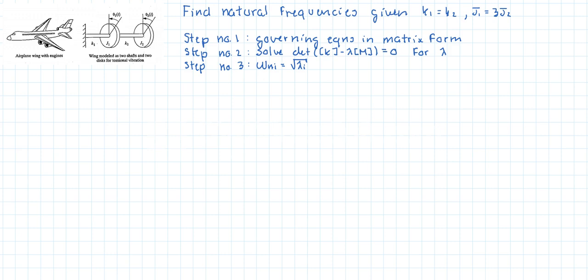Hi everyone. In this video we're going to do a second example on finding the natural frequencies of a two degree of freedom system. We're given that the stiffness constants of the first and second shafts are equal, and also the rotational inertia of the first disc is three times the rotational inertia of the second disc. Recall that the first step is to find the governing equations of motion in matrix form.